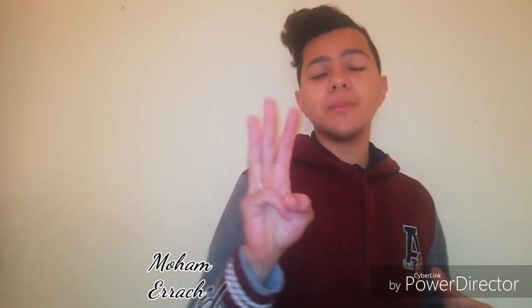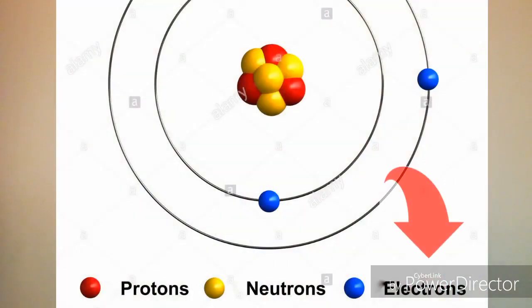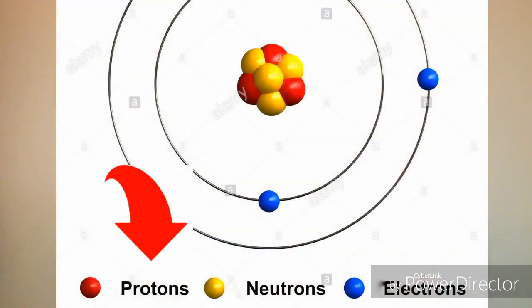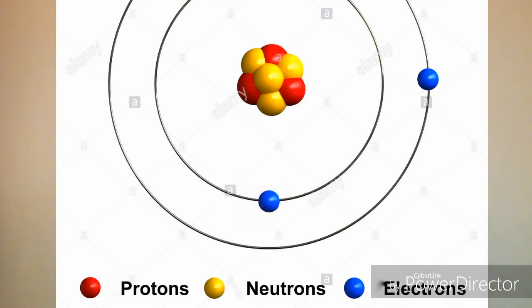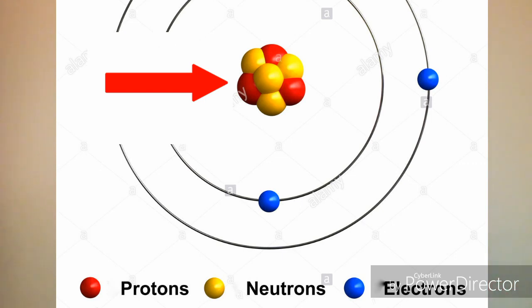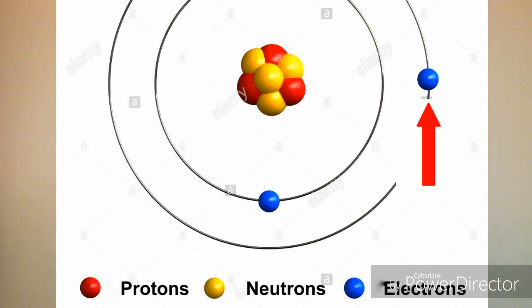Now in order to understand this phenomenon, we first have to take a look at the composition of an atom. An atom consists of three main parts: electrons, which are negatively charged; protons, which are positively charged; and neutrons, which carry no charge and which we won't be discussing in this video. Both the neutrons and protons reside in the core of the atom while electrons orbit them. Generally, an atom will contain the same amount of protons as electrons, making it overall neutral.